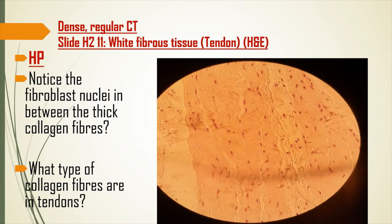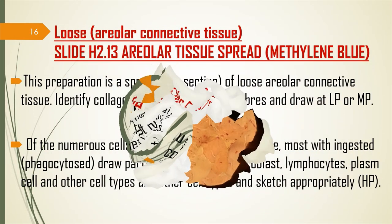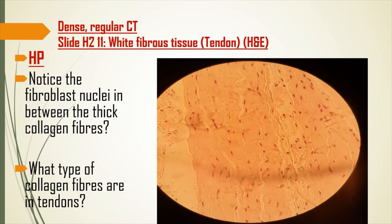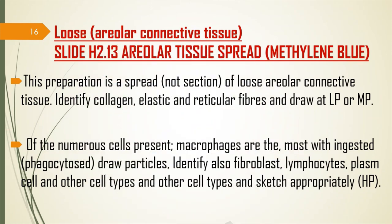At high power you can clearly see how regular the fibers are — running parallel to each other in a regular arrangement. The type of fibers found here are collagen fibers. You need to know what type of collagen makes up the fibrous connective tissue of a tendon. The dark nuclei visible between the fibers are fibroblasts. Label this as dense irregular connective tissue made up of collagen fibers filled with fibroblasts.